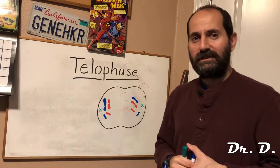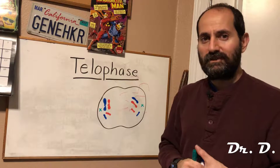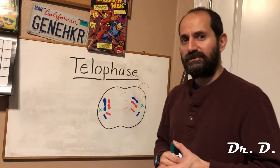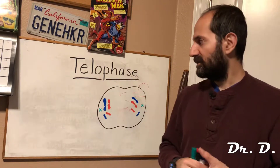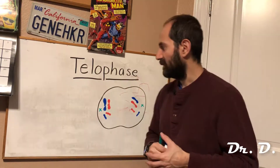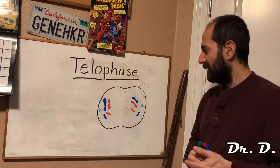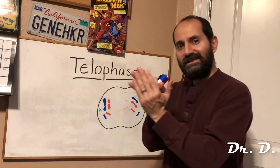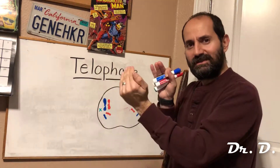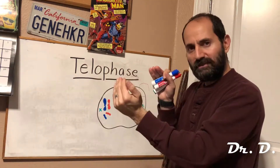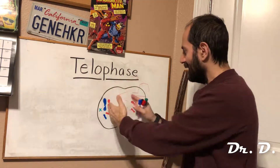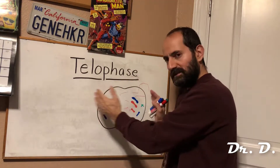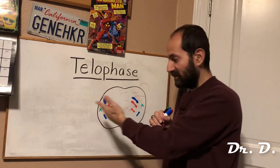Everyone, Dr. D here, and in this video I'm explaining the fifth and final part of mitosis. This is the fifth and final subphase called telophase. By this point, remember the sister chromatids had just separated from one another in anaphase, and in telophase those sister chromatids have fully separated to opposite poles of the cell.